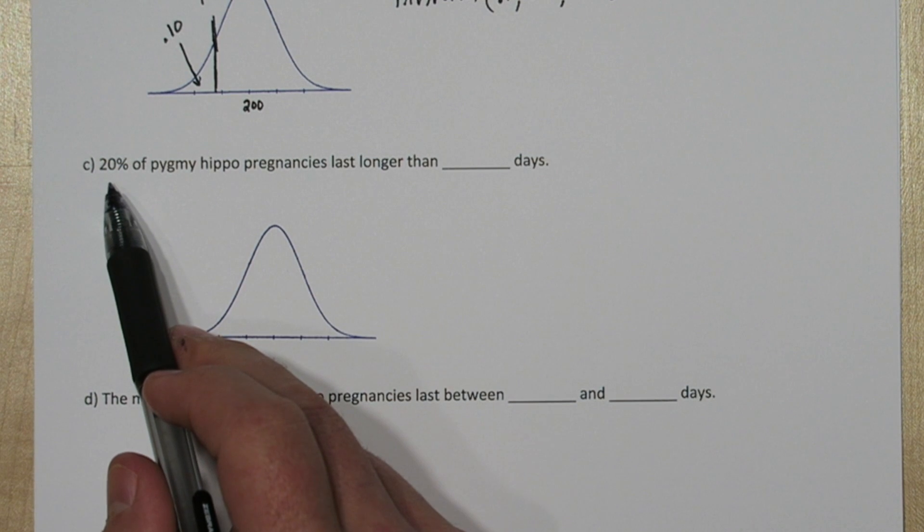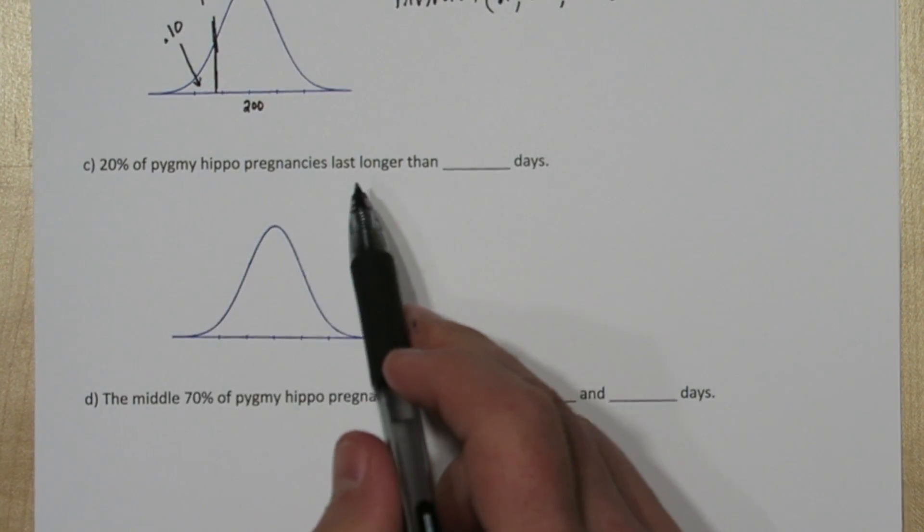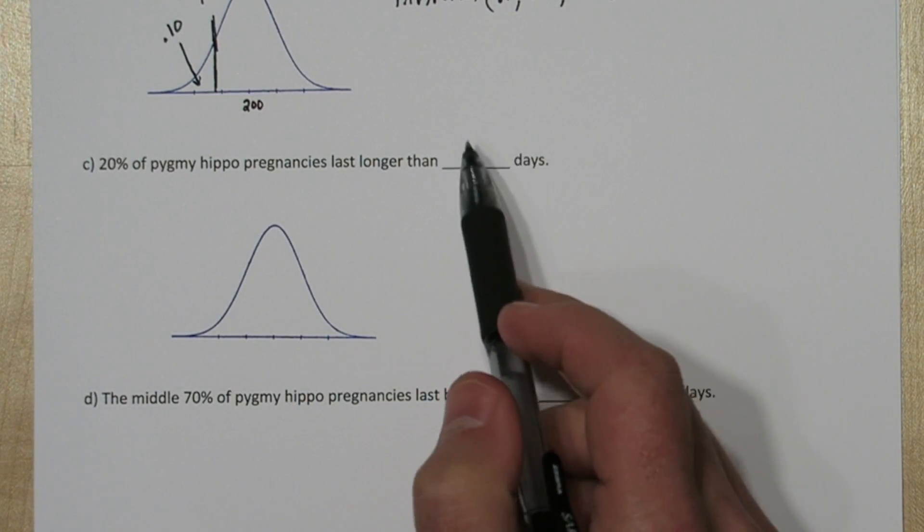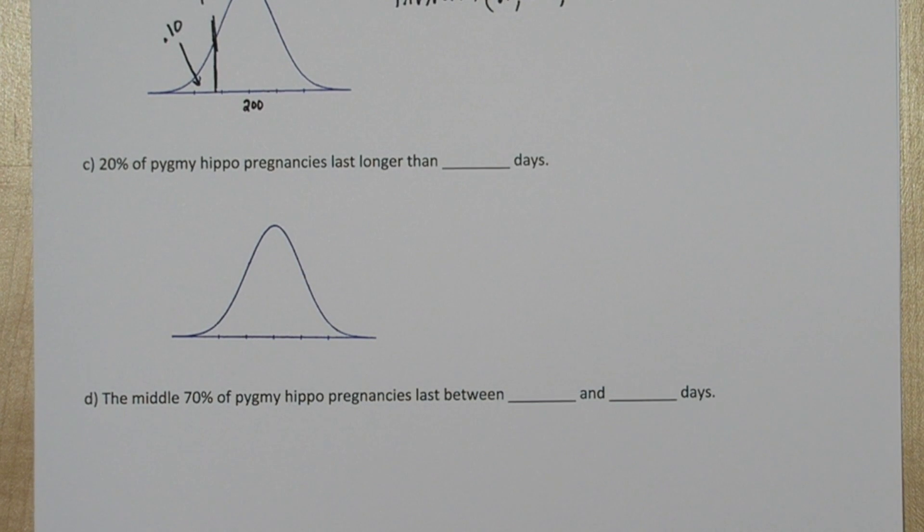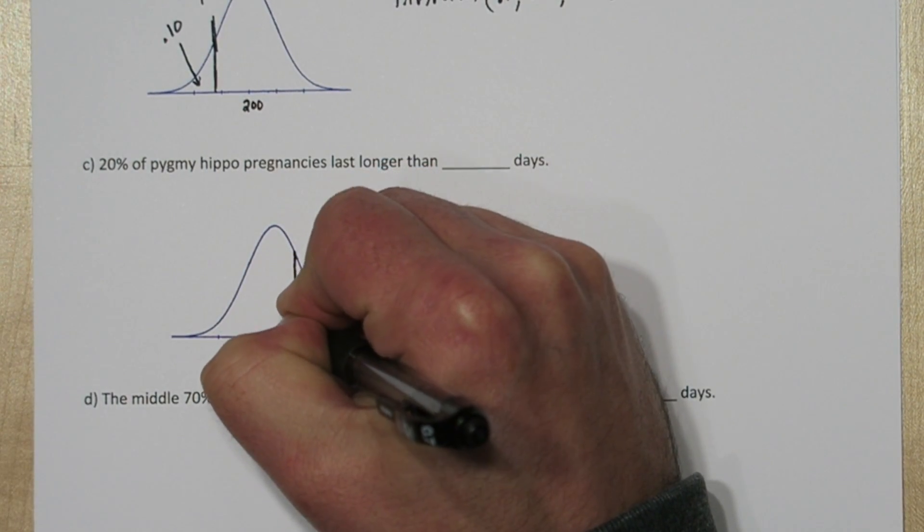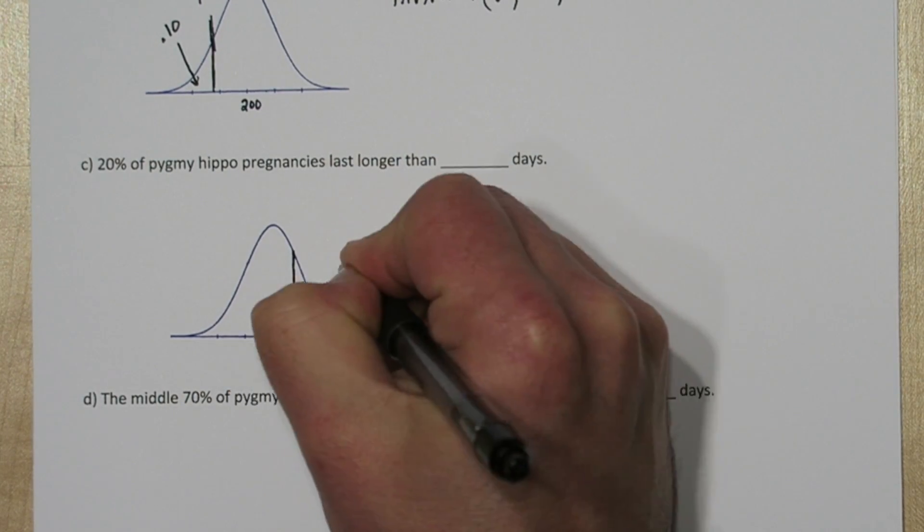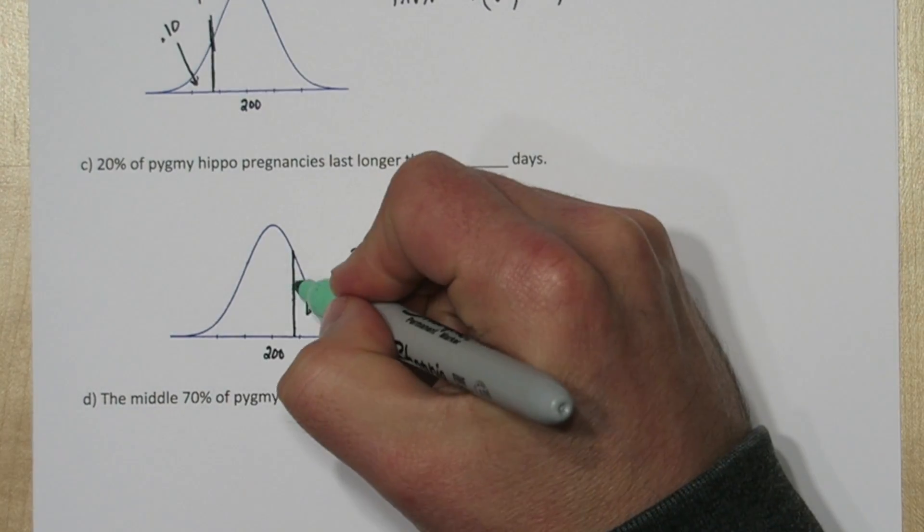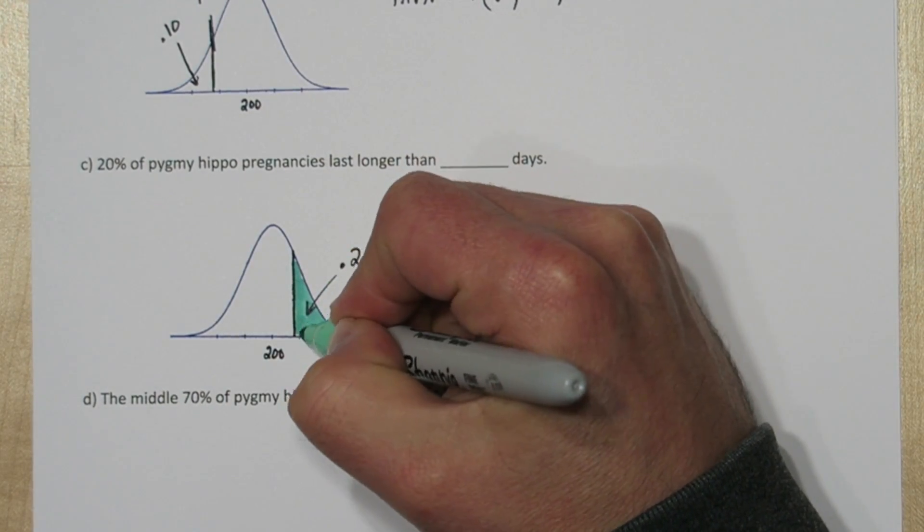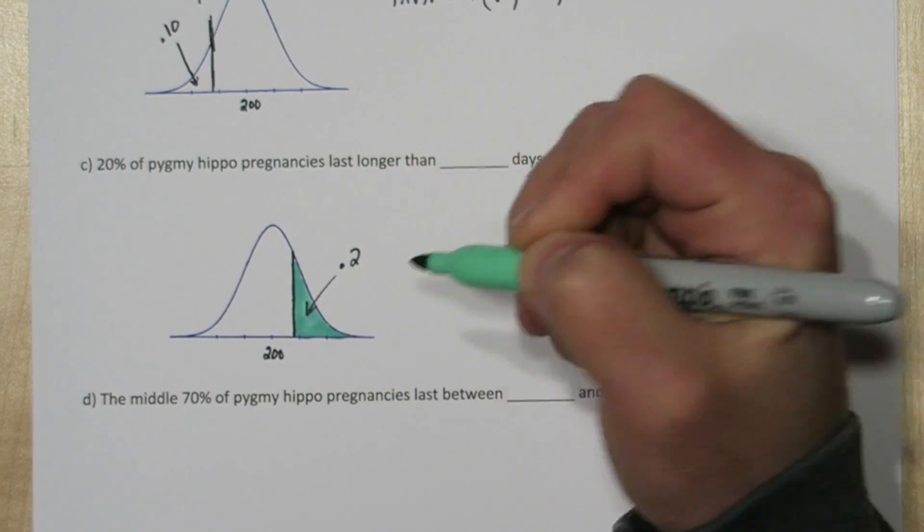On this one we start with an area. 20% of pygmy hippo pregnancies last longer than, and we're trying to figure out what the cutoff value is. Let's start by drawing a cutoff that we think cuts off the upper 20% of the area. Maybe about here. So we know the mean is 200. And we want this area to be 0.2.